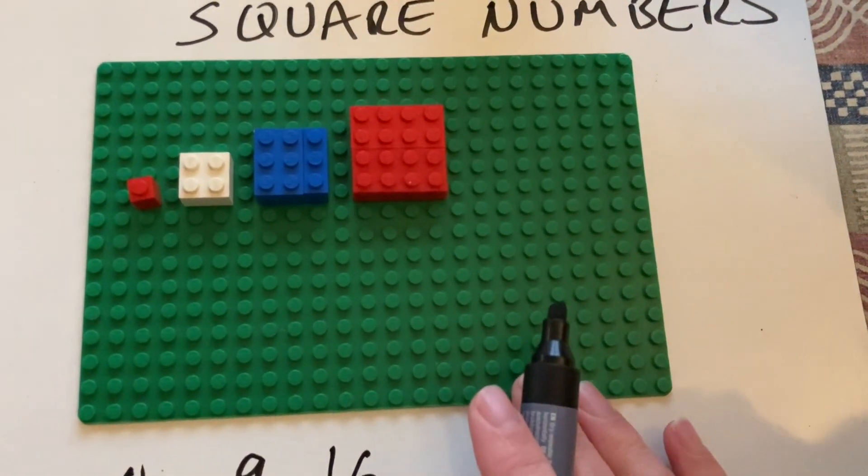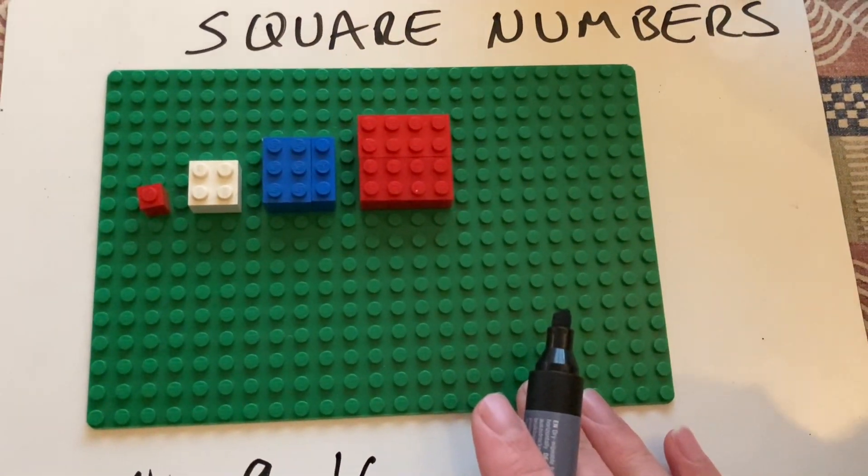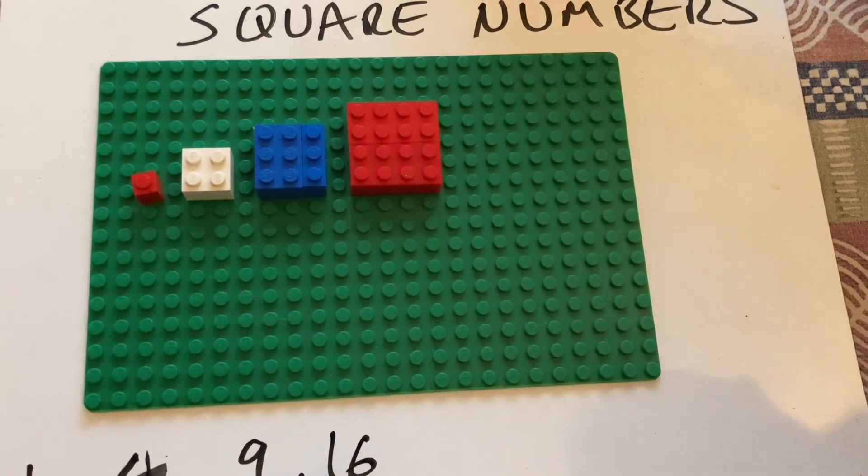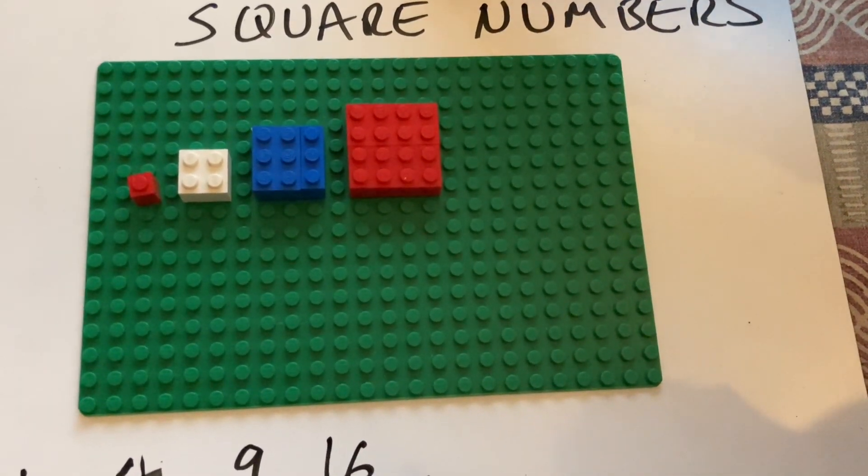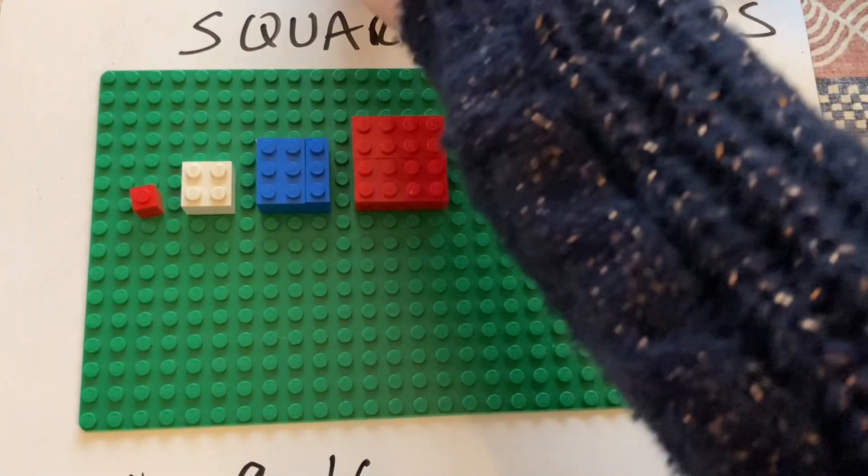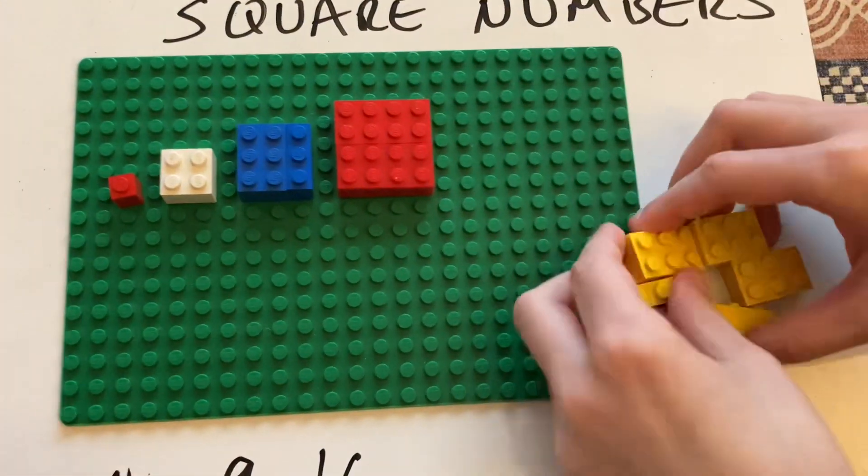What's the next square number? After one, two, three, four, so it's going to be five. Five times five, which is twenty-five.